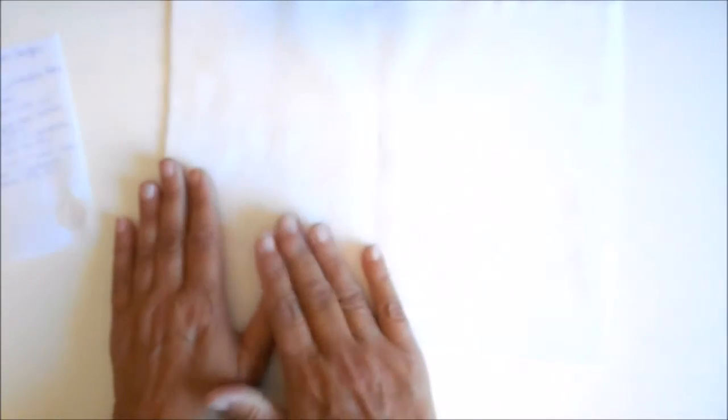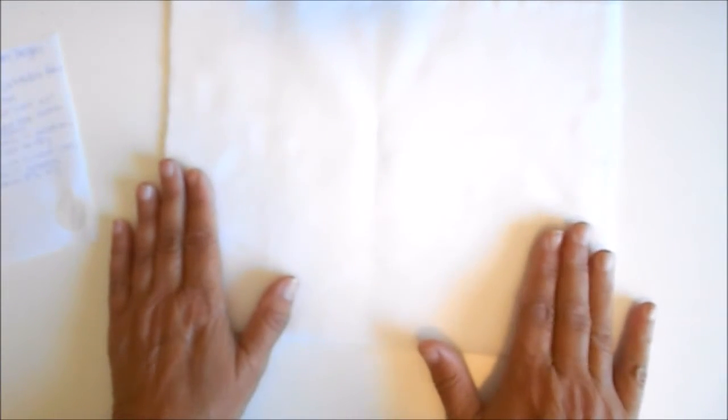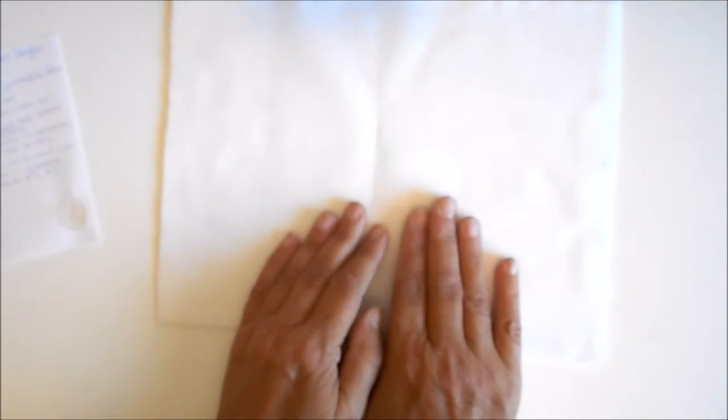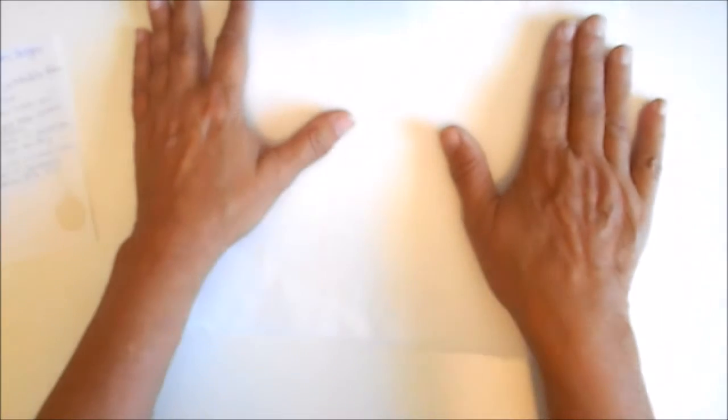If you're making your own with Bubble Jet Set 2000, you'll want to soak the fabric, lay it flat to dry, and then press it with a warm iron to get it to lay nice and smooth before you run it through your printer. And I've cut these sheets to eight and a half inches by eleven inches, which is the same size as printer paper.